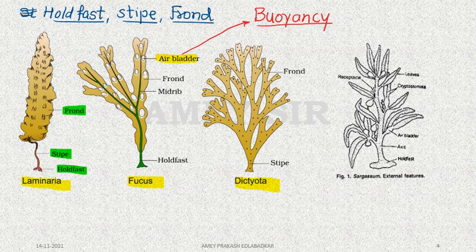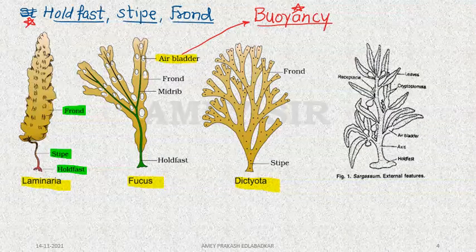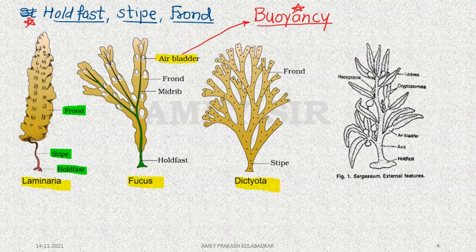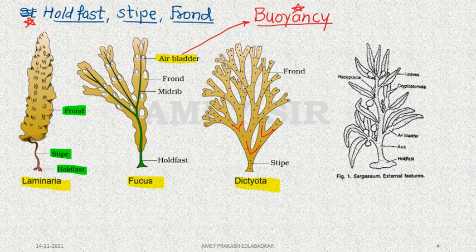This is the first diagram of body parts. The second diagram of body parts is also an important question. When we talk about Dictyota, we see branching from one point into two branches repeatedly — branches are produced dichotomously.